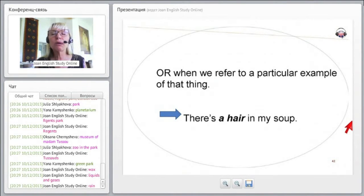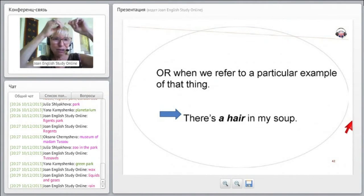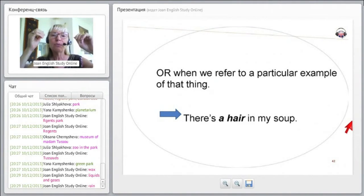Or when we refer to a particular example of that thing. Here's a good one: when you have hair on your head, you can't count the individual hairs. But there's a hair, one hair in my soup. So some can be both if you're talking about one hair. But we always say we have hair on our head, not hairs. The non-countable is what we use.